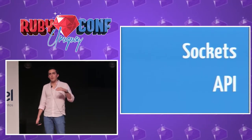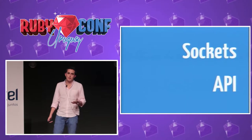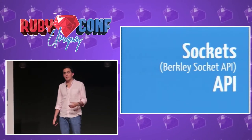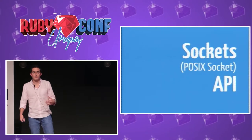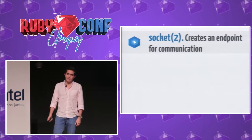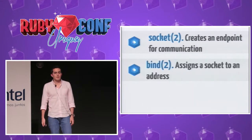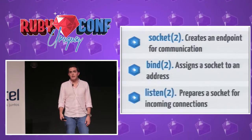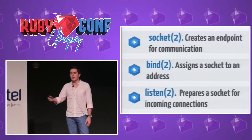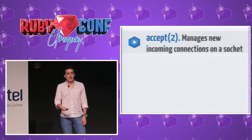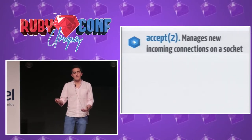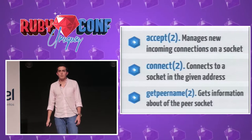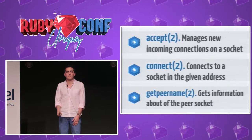What is the sockets API? The first system call is socket() — it creates an endpoint for communication. The second is bind(), which assigns a socket to an address. Then listen() prepares a socket to start listening for connections, and accept() manages incoming connections. There is also getpeername().